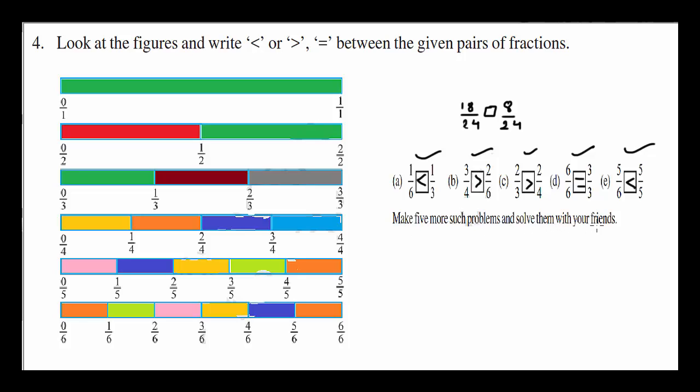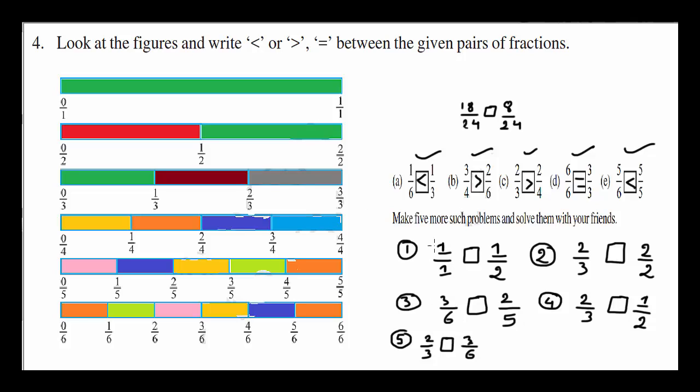Now make 5 more such problems and solve them with your friends. Based upon this picture only. We have selected some random problems. You can select any of them. Now you just have to use the signs. 1 over 1, 1 over 2. Obviously 1 over 1 is greater than 1 over 2 as shown in picture. Therefore 1 over 1 is greater.